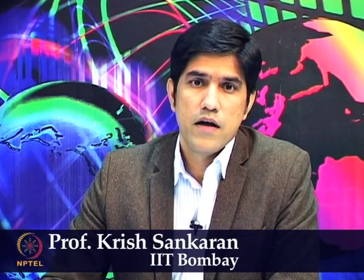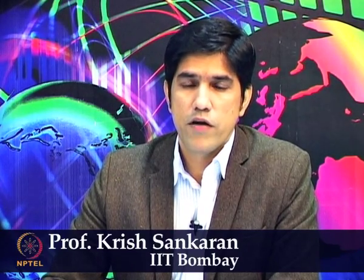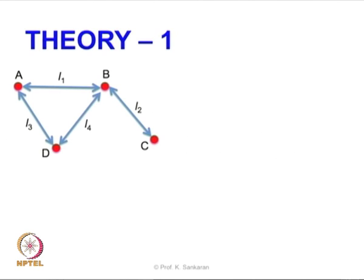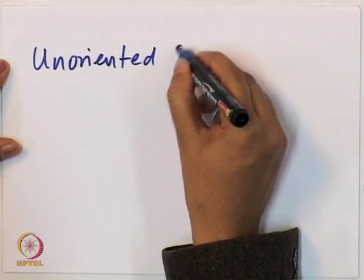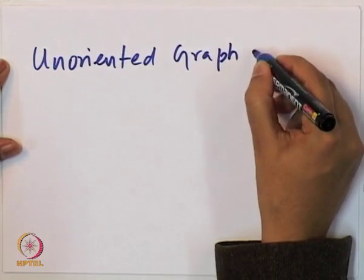In the earlier module we set the basis for using the right terms and defined our motivation for going forward with algebraic topological formulation. Now we will look at some of the topological aspects of this method. We will start looking into a network. As you can see, the arrows are pointing in both directions — there is no preferred direction. This is called an unoriented graph or network.